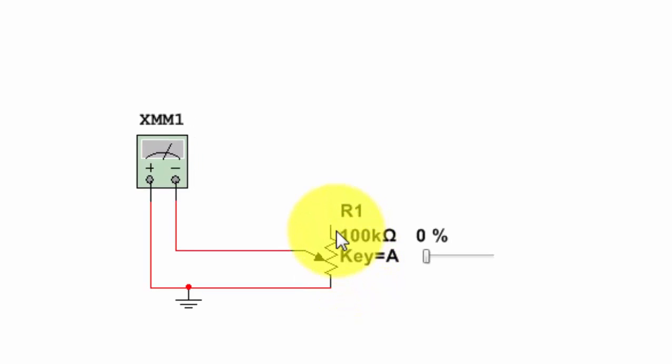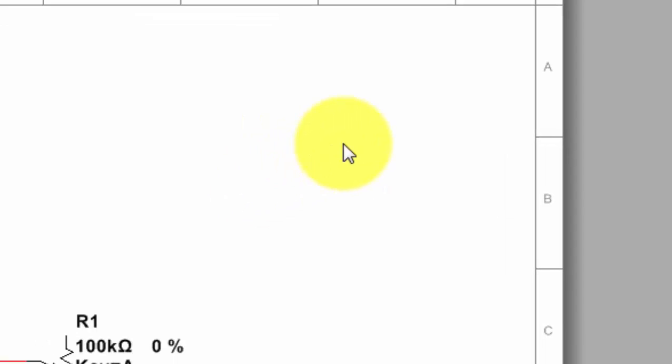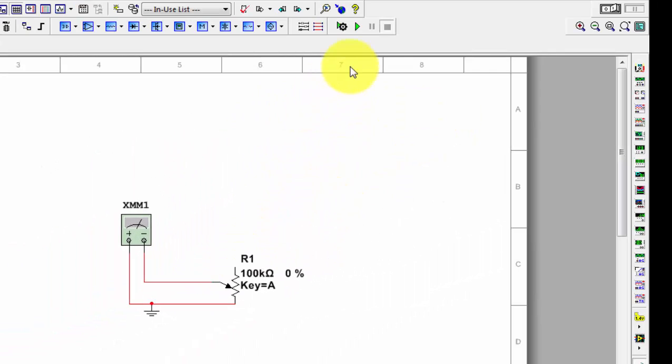What I have here is a symbol of the potentiometer connected to a digital multimeter. The digital multimeter can be found on the right side highlighted here, and you can just click on it and drag it to the screen. I'm going to just delete this one now and show you the resistance.